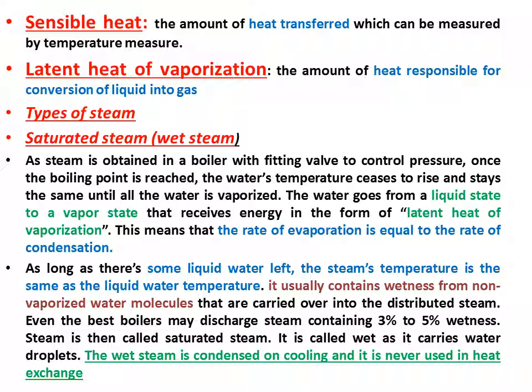There are three types of steam: saturated steam, unsaturated steam, and superheated steam. Saturated steam is steam obtained in a boiler with a fitting valve to control pressure. Once the boiling point is reached, the water temperature stops rising and stays the same until all the water is vaporized.